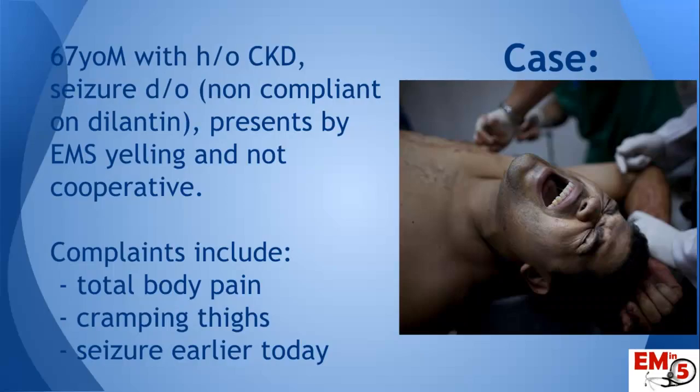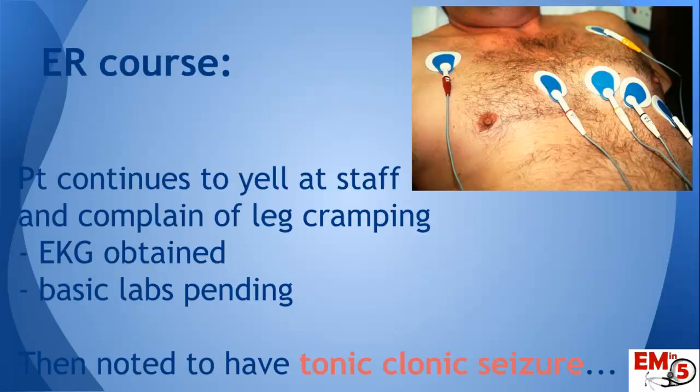So let's start off with a case. We have a 67-year-old male with a history of chronic kidney disease and seizure disorder who's non-compliant on Dilantin. He presents by EMS — he's yelling, not cooperative, complaining of a lot of different things including total body pain, thigh cramping, and he also had a seizure earlier today.